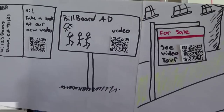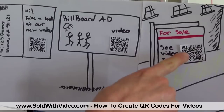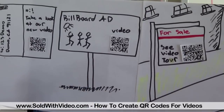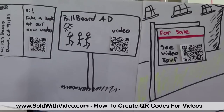Alright, as you can see I set up a couple of scenarios here where you may be able to display your QR code. We have the for sale sign for realtors and real estate agents to give video tours of homes, we have a billboard here with your QR code in it, and this is supposed to be a postcard with the QR code on it as well for mail marketing.